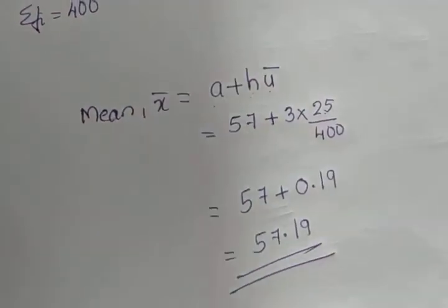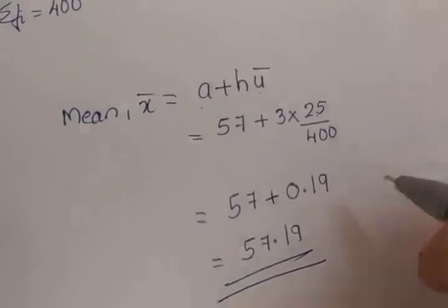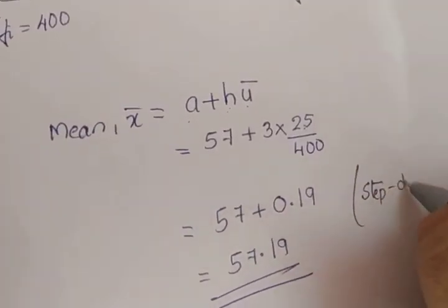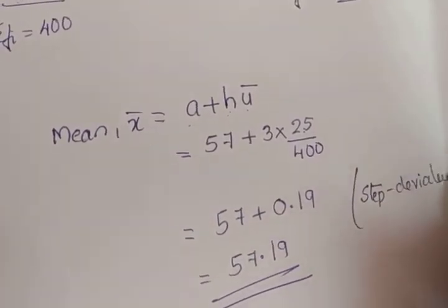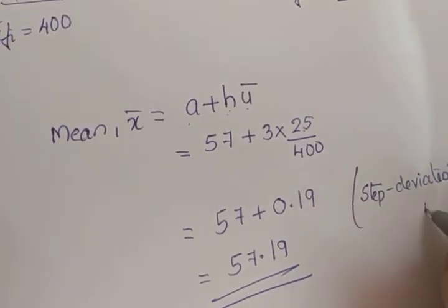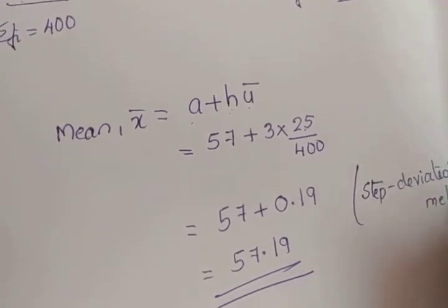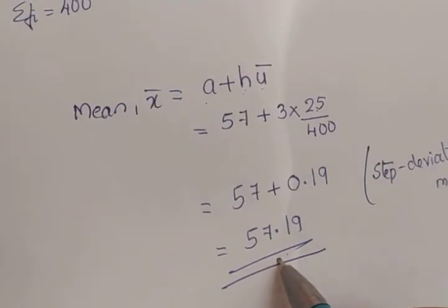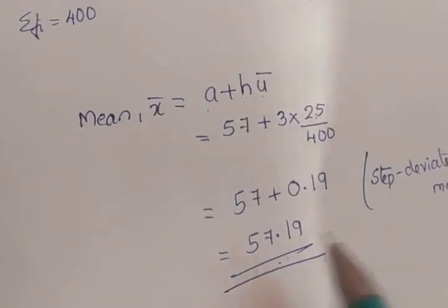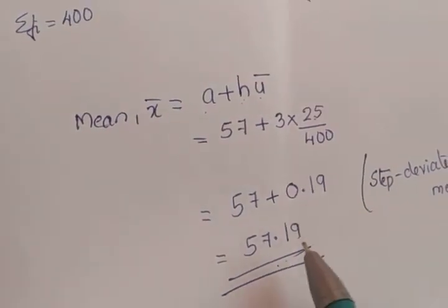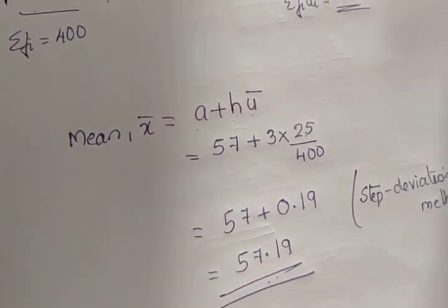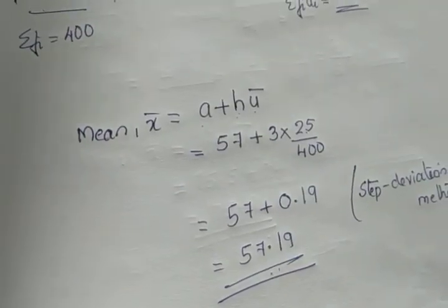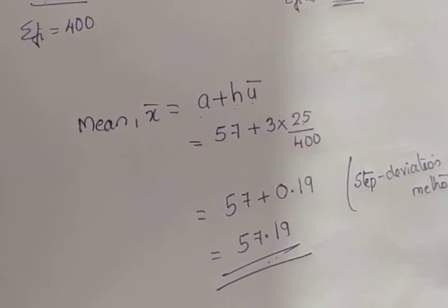Using the step deviation method, we got the mean value as 57.19. This is the same value we would get if we applied the direct method or the assumed mean method.